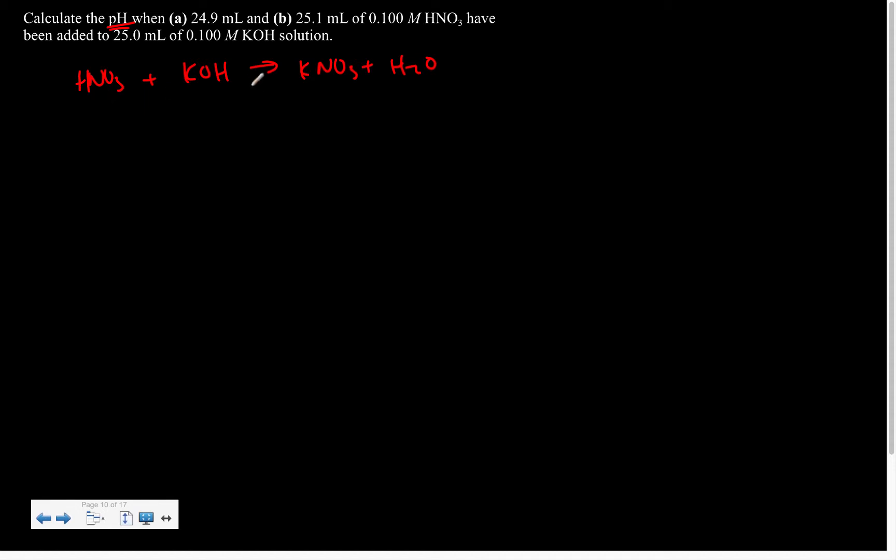And then we need to think about what we're going to do. So solving for scenario A, where we have 24.9 mL of 0.1 molar nitric acid and 25 mL of 0.1 molar KOH, we're going to start by thinking about how much of each we have.